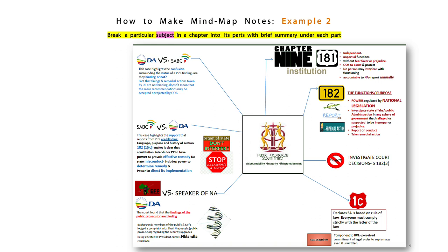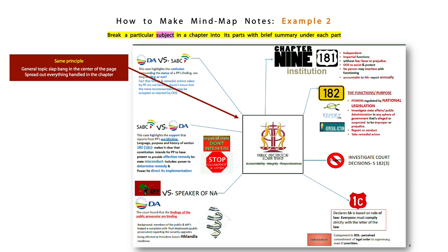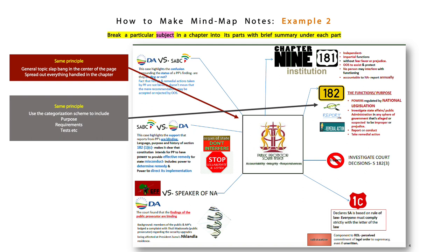You can work your way around key cases: SABC versus DA, EFF versus speaker of the NA and the DA. It's the same principle as what we just looked at in the first example. General topic, slap bang in the middle of the page. Spread everything out that's handled in the chapter.